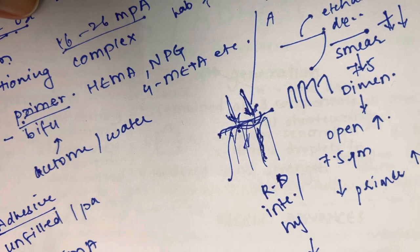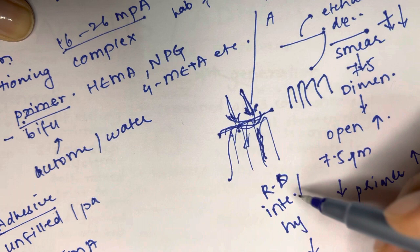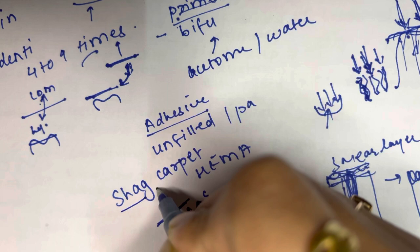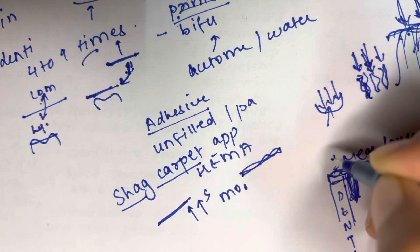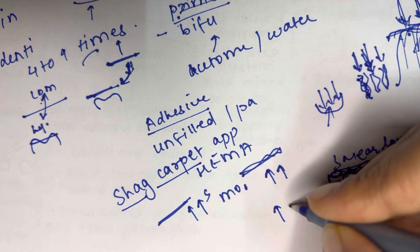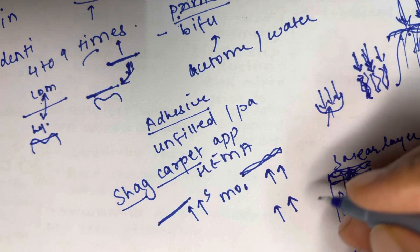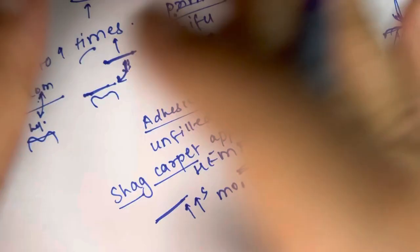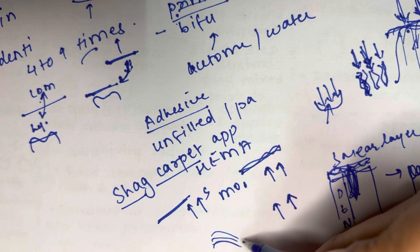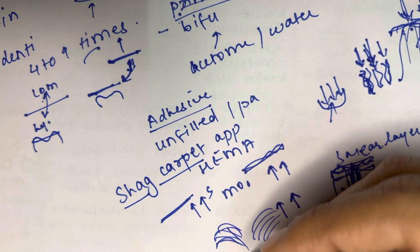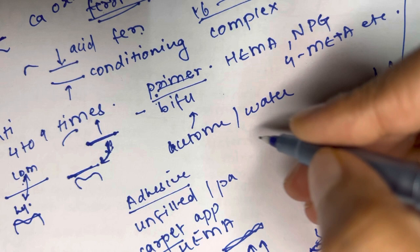The hybrid layer is the layer formed when resin flows into the areas of dentine. When primer is applied on the dentine, it accelerates monomer penetration. The upright collagen fibers directed upwards into the monomer give the appearance of frayed ends of a carpet — this is known as the shag carpet appearance.